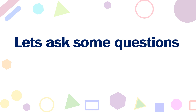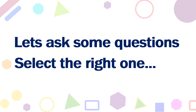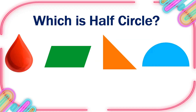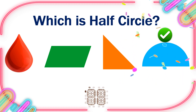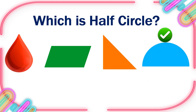Let's ask some questions. Select the right one. Which is Half circle? 10, 9, 8, 7, 6, 5, 4, 3, 2, 1, 0. This is the right one.